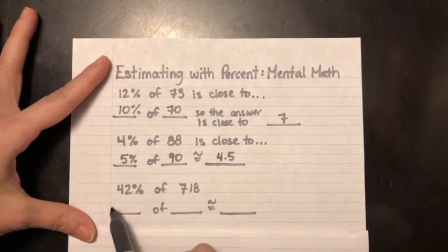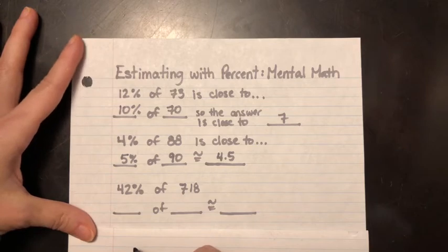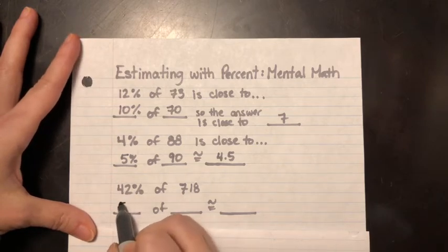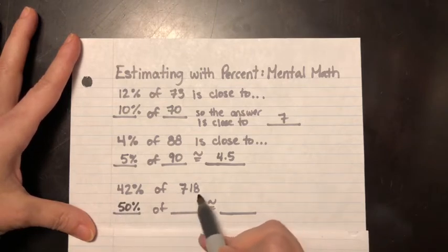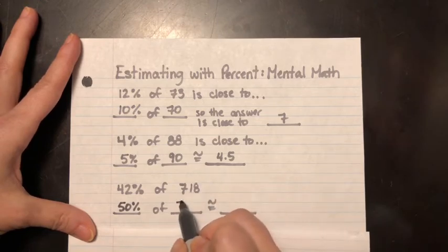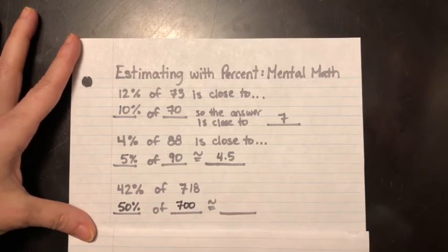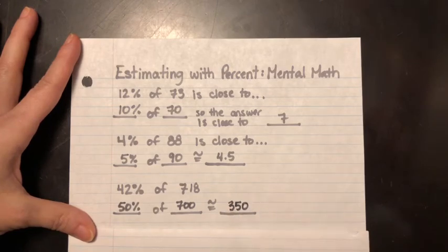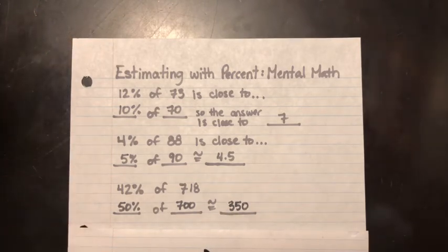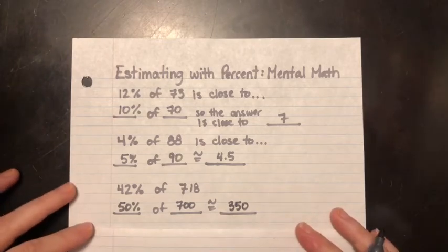One more of these. So here we have 42% of 718. I'm just going to make the big leap here and go 50% because you know what? I can do 50% pretty well in my head. I can cut things in half. I've bumped this up here from 42 to 50. Now I'm at 718. I'm going to bump it down. I'm going to bump it down to 700. Well, what's half of 700? It's 50% of 700. That's going to be about 350. And I'm comfortable with that because I got my approximate symbol there. I'm somewhere close. So this is the estimating here that you're going to be doing today.